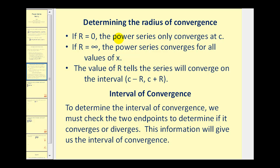Here's how we'll approach finding the interval of convergence. If r equals zero, the power series only converges at c. If r equals infinity, the power series converges for all values of x. If we find a specific value for r, it tells us the series converges on the open interval from c minus r to c plus r. However, to determine the full interval of convergence, we must check the two endpoints to determine if it converges or diverges at those points.